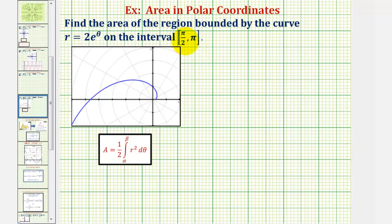To determine the area bounded by a polar curve, we use the area formula: area equals one-half times the integral of r squared integrated with respect to theta from alpha to beta.